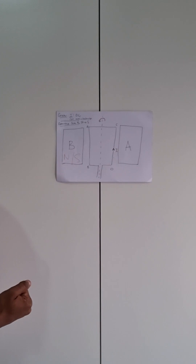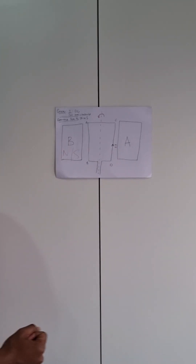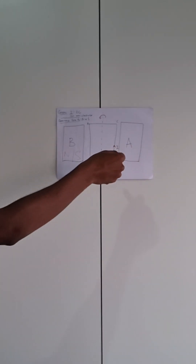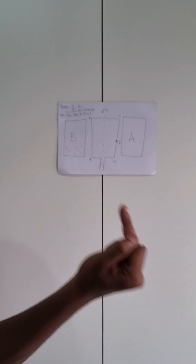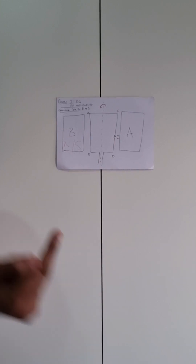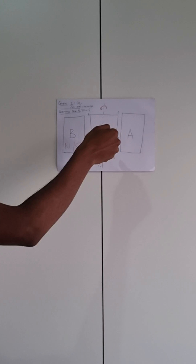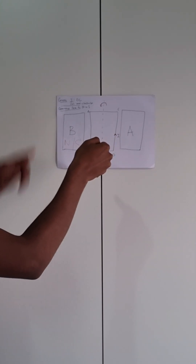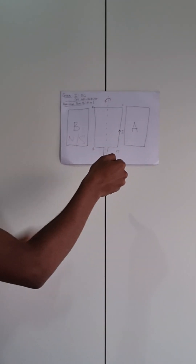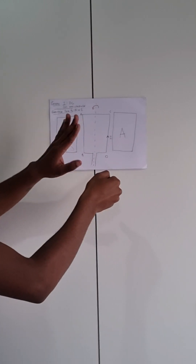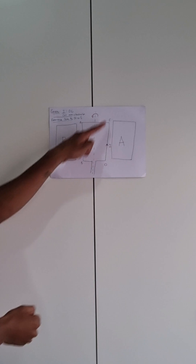Remember, we use the middle finger to represent the direction of the current. I'm going to fold these other fingers and focus on the current moving into the page — from D to C. We are also provided with the direction of the coil, which is moving anti-clockwise.